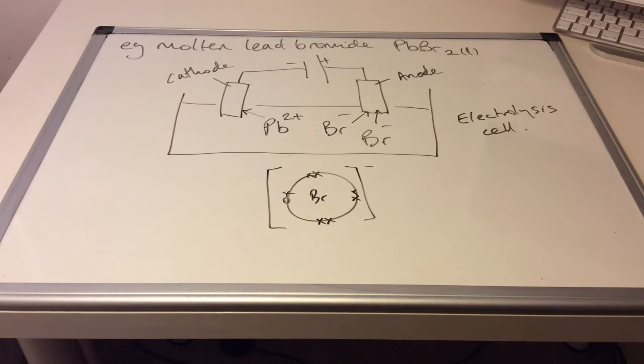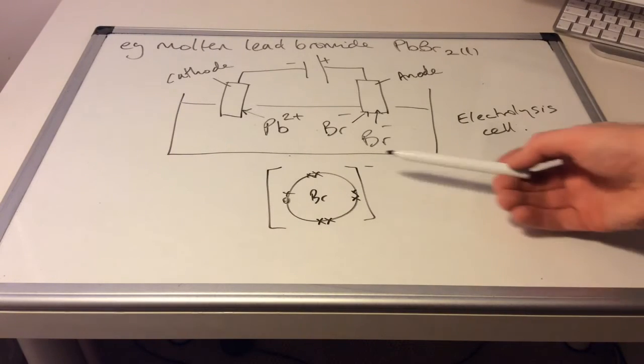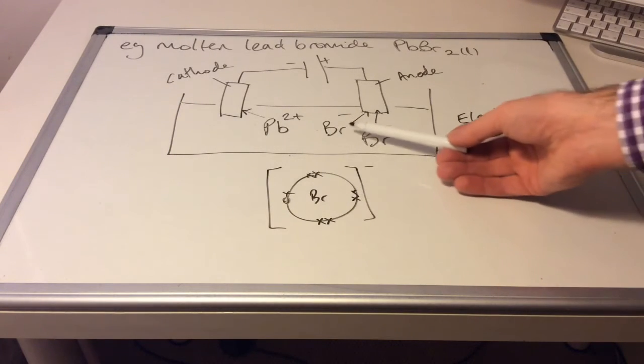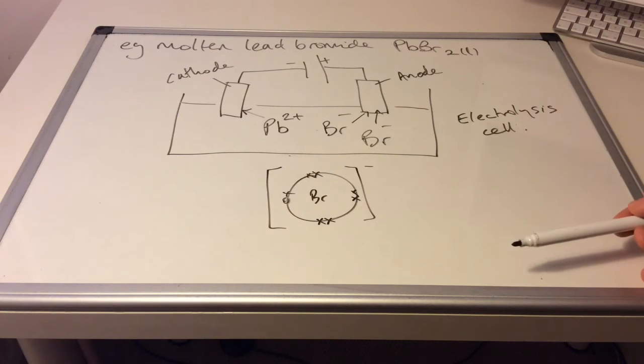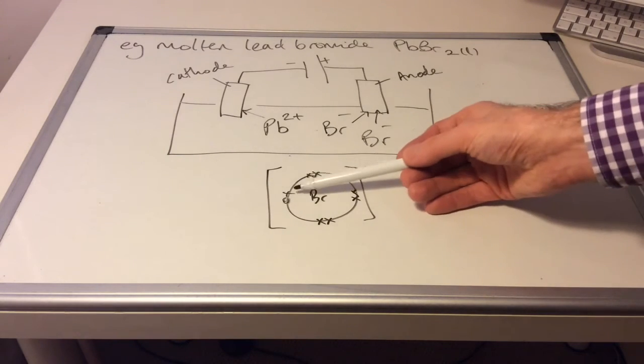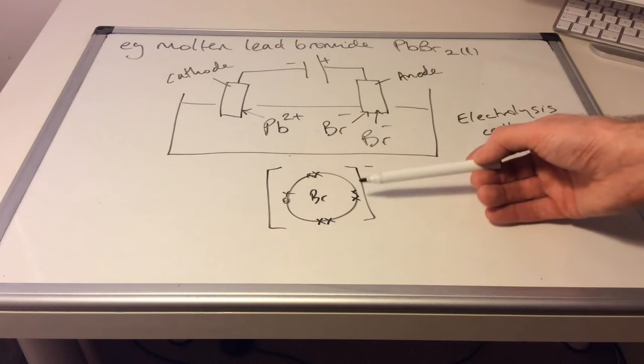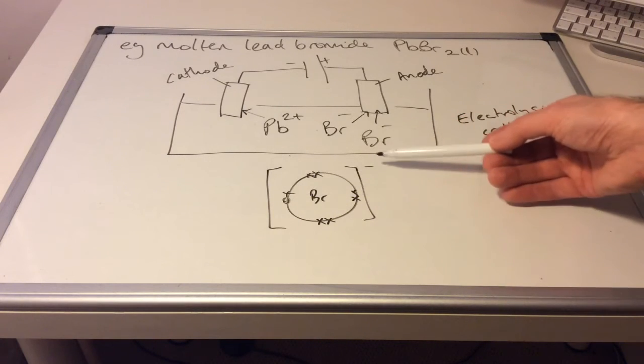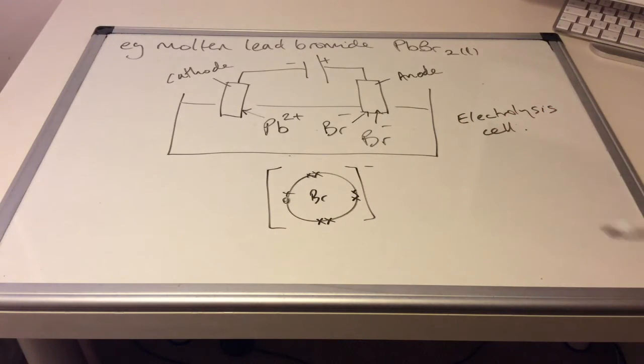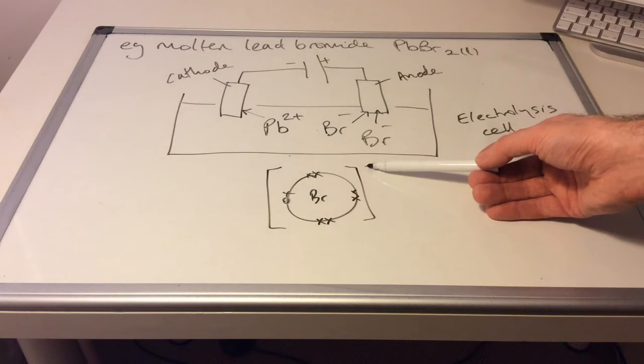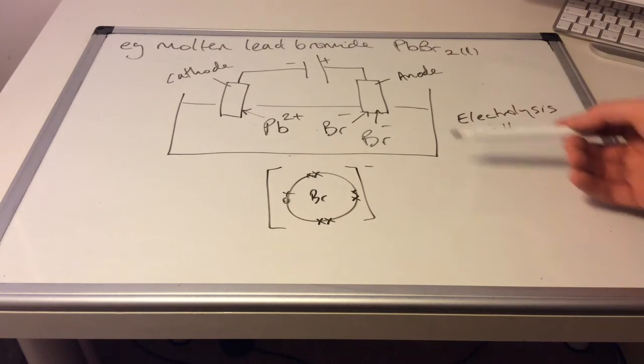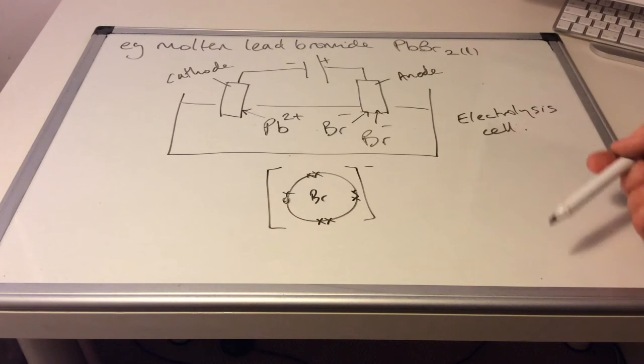So you can see underneath the tank now, I've drawn a dot and cross diagram for one of these bromide ions. So bromine's in group 7, so we've got 7 crosses. And the extra electron is the one that gives it the negative charge. So because it's negatively charged, it's attracted to the anode, the positive electrode, something's going to happen.